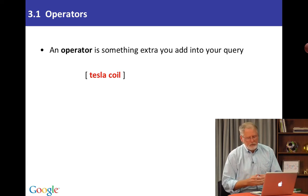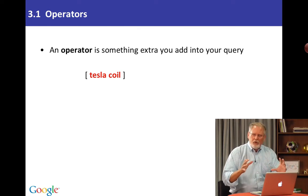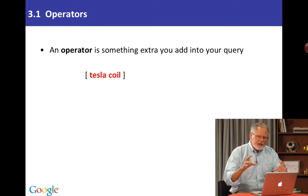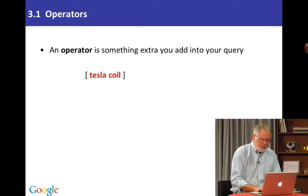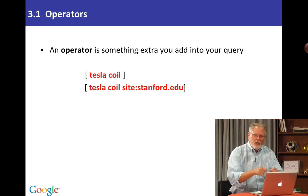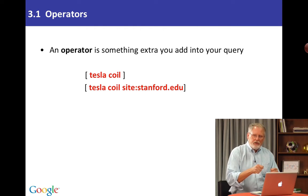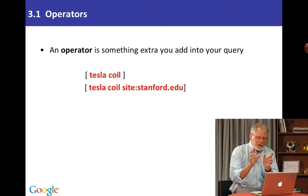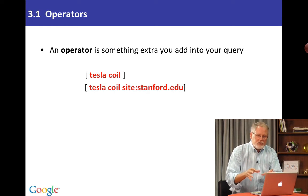An operator is a special word we use to talk about things that you add to the query to make it do what you want. Here's an example: if I do a query like [tesla coil], that's a regular query — you don't type the square brackets, it's just tesla space coil. Then when you add something extra like site:stanford.edu, that's the operator. The site colon is what you put in front of the argument — that is stanford.edu — in order to do something special to the results.